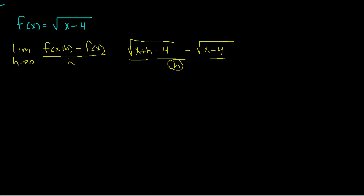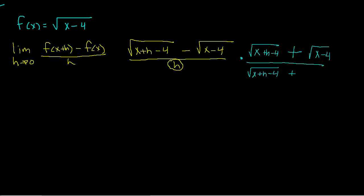Please don't distribute this negative sign — you cannot distribute a negative sign into a square root. I need this h to cancel, and the only way it's going to cancel is if I can get a factor. So I'm going to use a process called multiplying by the conjugate. This will get rid of the square roots in the numerator — this is rationalizing the numerator. I'm going to multiply by the square root of x plus h minus 4 plus the square root of x minus 4. That's the conjugate, and I must also multiply the denominator by the same thing — so I'm essentially multiplying by 1.